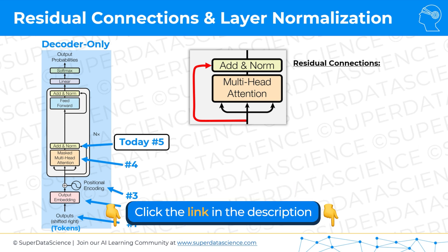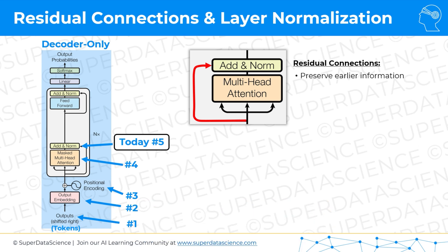Residual connections serve the following purposes: they preserve earlier information. In the process of multi-head attention, the calculations are quite complex and some things might get lost, so why not add them back in to give the transformer the opportunity to revise them. They also combat vanishing gradients — a technical topic we won't go too deep on — and they improve learning efficiency. There'll be a paper I'll refer to at the end of this tutorial where you can read more about those things.